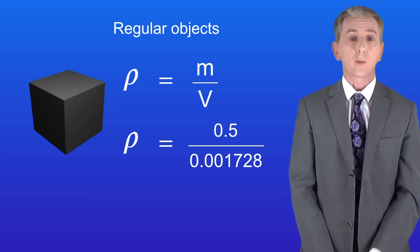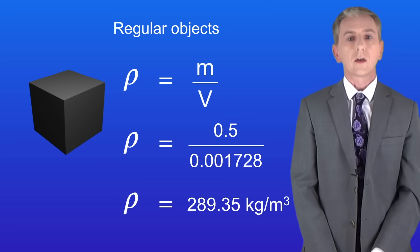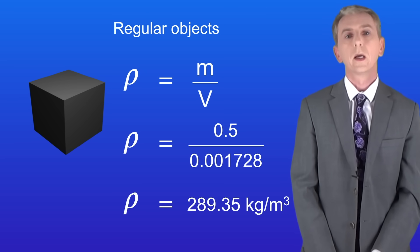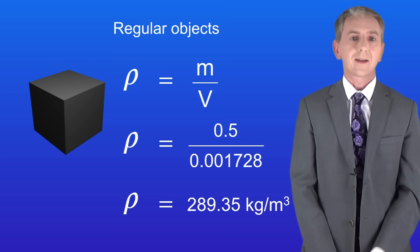Putting the mass and the volume into the equation gives us a density of 289.35 kilograms per meter cubed to two decimal places. So as you can see determining the density of a regular object is relatively straightforward.